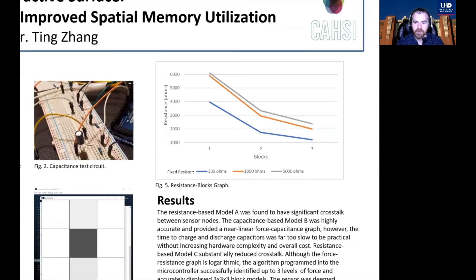As you can see, the graphs aren't linear, which is largely due to deformation of the Velastat material. This presents a challenge for variable force detection.